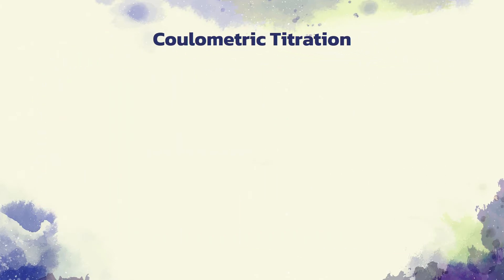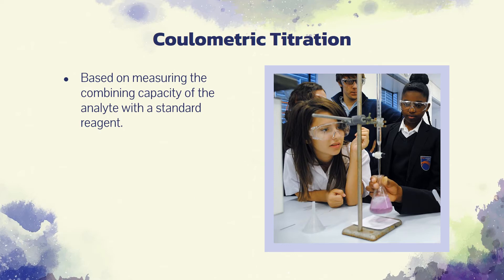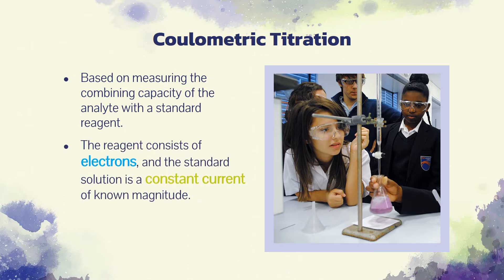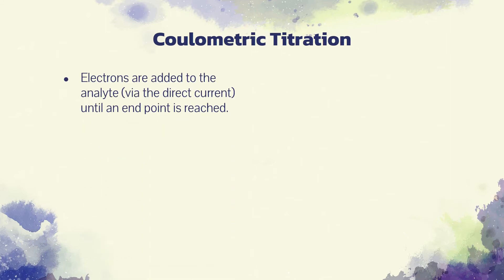Coulometric titrations are similar to other titrimetric methods in that the analyses are based on measuring the combining capacity of the analyte with a standard reagent. In the coulometric procedure, the reagent consists of electrons and the standard solution is a constant current of known magnitude. Electrons are added to the analyte via the direct current, or to some species that immediately reacts with the analyte, until an endpoint is reached.